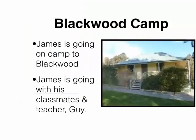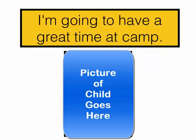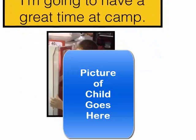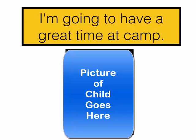On the second page we talk about the camp that James is going to. For example, James is going on camp to Blackwood and he is going with his classmates and his teacher Guy. It's really important to assure the children that they are going to have a good time at camp, so reinforce the kinds of feelings you want them to experience. Here I've said 'I'm going to have a great time at camp,' again with a picture of the child.